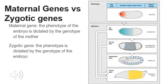Although the existence of determinants was established through these experiments, what actually separated these determinants into separate categories are genes, specifically zygotic and maternal genes. The phenotype of zygotic genes is dictated by the genotype of the embryo, while in maternal genes, the phenotype of the embryo is dictated by the genotype of the mother.